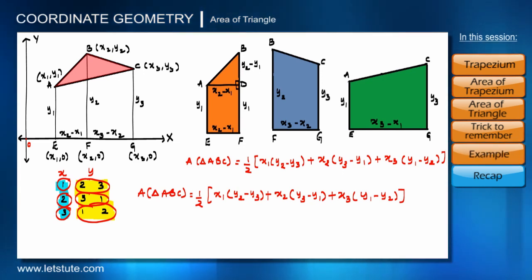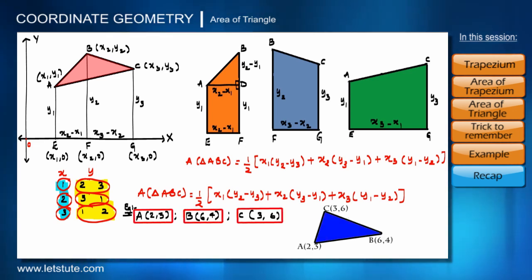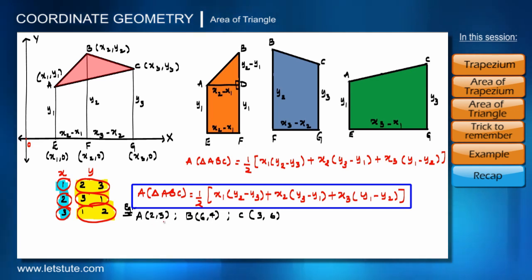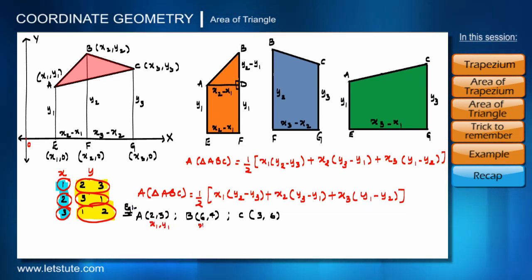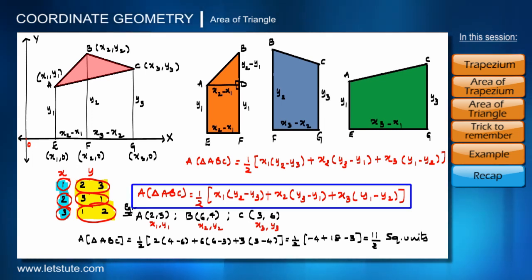Let's take an example to see how the formula works. Given vertices A(2, 3), B(6, 4), and C(3, 6), we need to find the area of triangle ABC. We don't need to draw a diagram — we can apply the formula directly. Taking x1=2, y1=3; x2=6, y2=4; x3=3, y3=6, the area of triangle ABC works out to 11/2 square units.